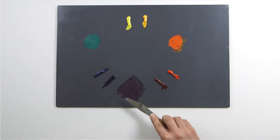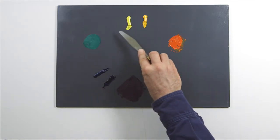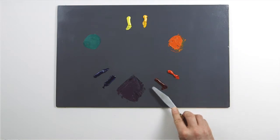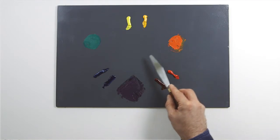The circle shows how the primaries and secondaries relate to each other. Those opposite each other are called complementaries.